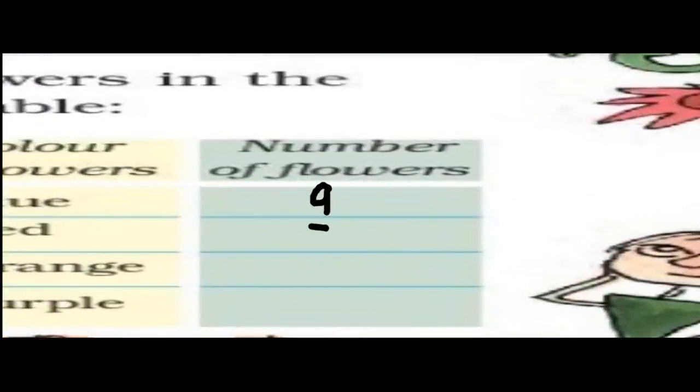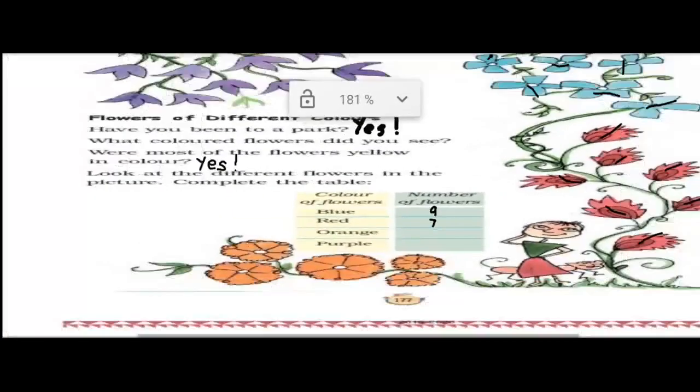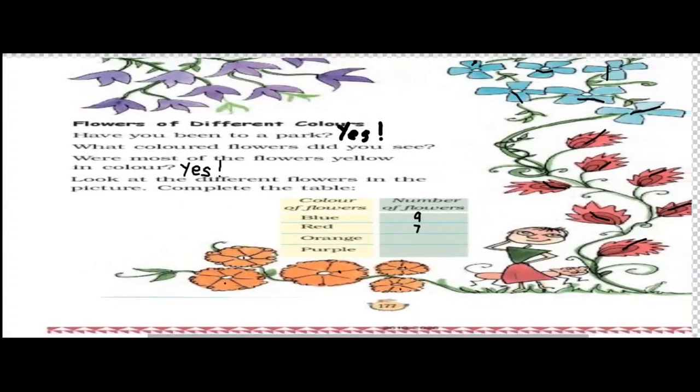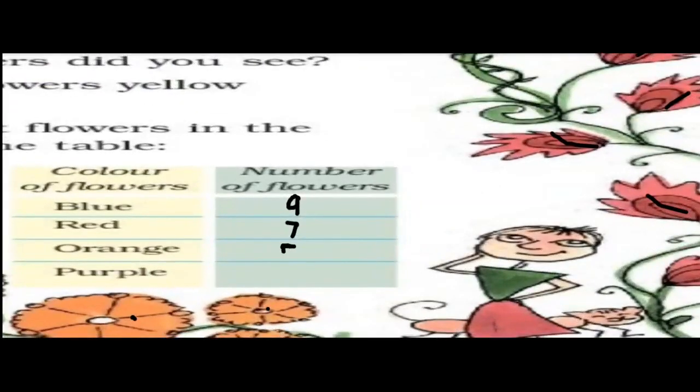Next, children, let us count orange flowers. You can see there are one, two, three, four, five orange flowers. So you will write five.